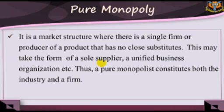A pure monopolist has the power to determine either the price or quantity he wishes to sell. It cannot determine the two simultaneously. The nature of the demand facing him is downward-sloping, as indicated in Figure 9.2.